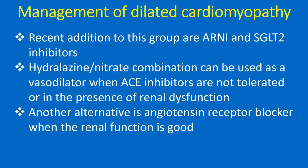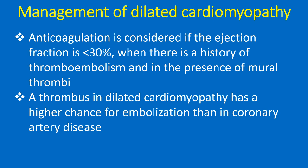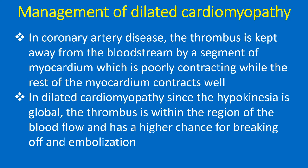Another alternative is angiotensin receptor blocker when the renal function is good. Anticoagulation is considered if the ejection fraction is less than 30%, when there is a history of thromboembolism, and in the presence of mural thrombi. A thrombus in dilated cardiomyopathy has a higher chance of embolization than in coronary artery disease, because in DCM the hypokinesia is global, so the thrombus is within the region of blood flow and has a higher chance of breaking off and embolizing.